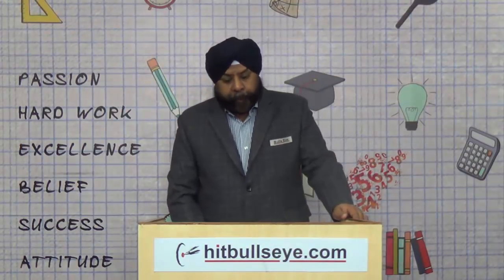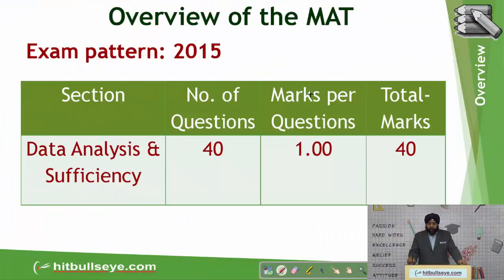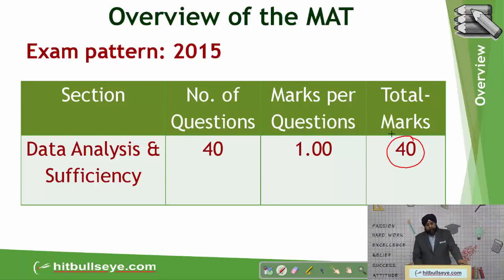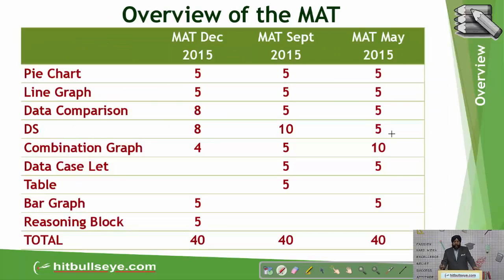Let's take an overview of the paper. There are 40 questions of one mark each, aggregating to a total of 40 marks, and there is also negative marking of 0.25 marks per question. We will take an in-depth analysis of the last three actual MAT papers: MAT May 2015, MAT September 2015, and MAT December 2015.